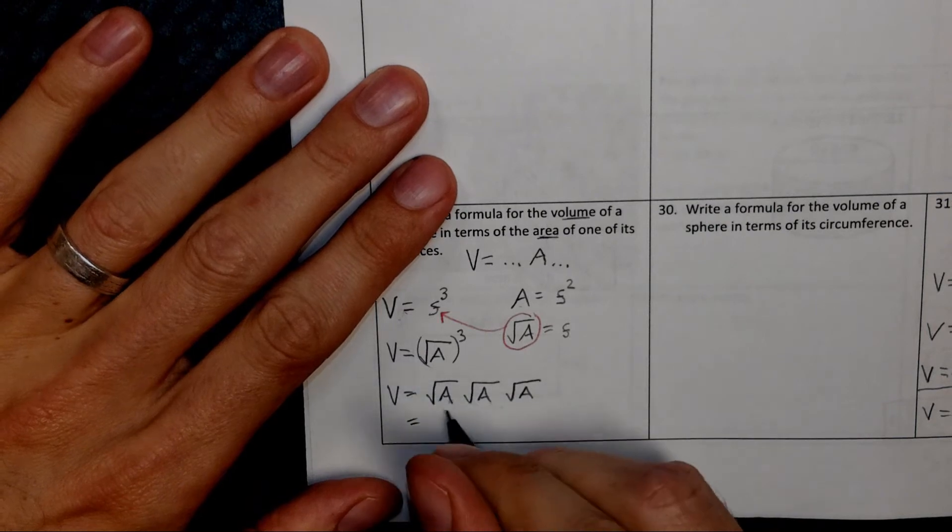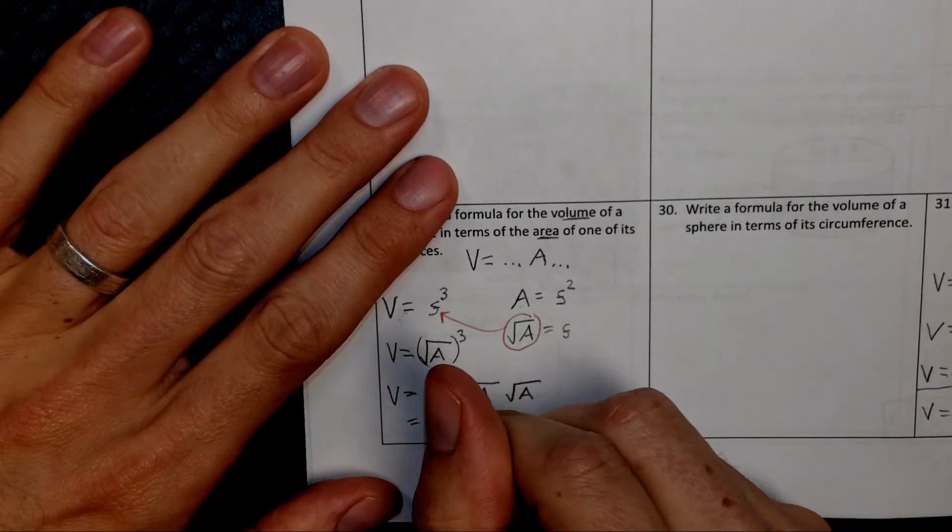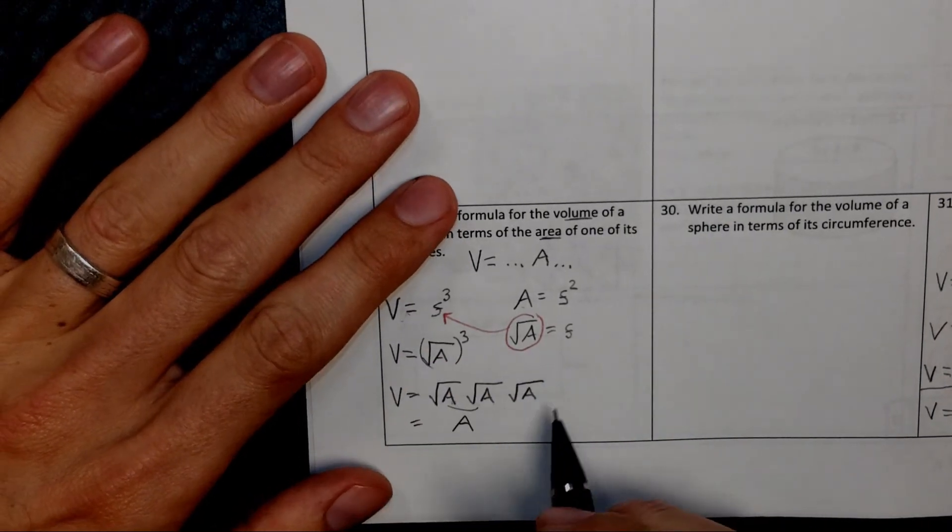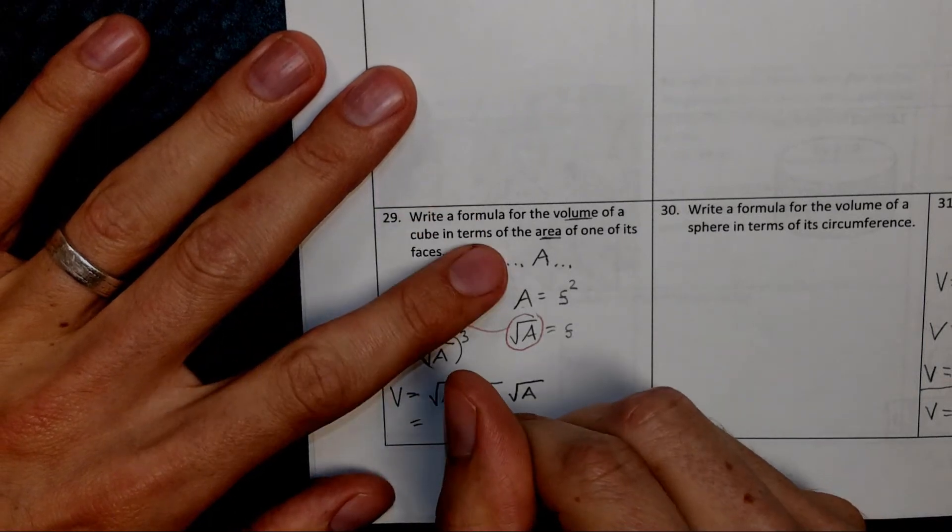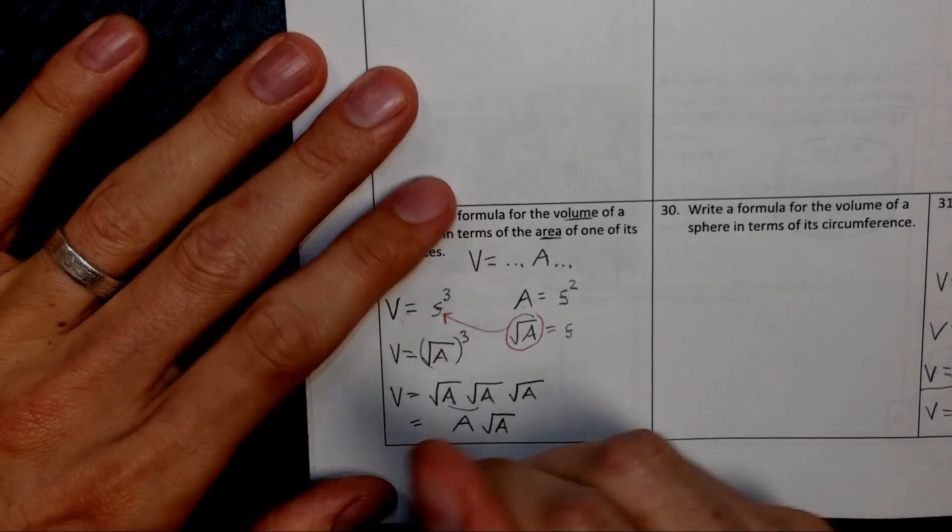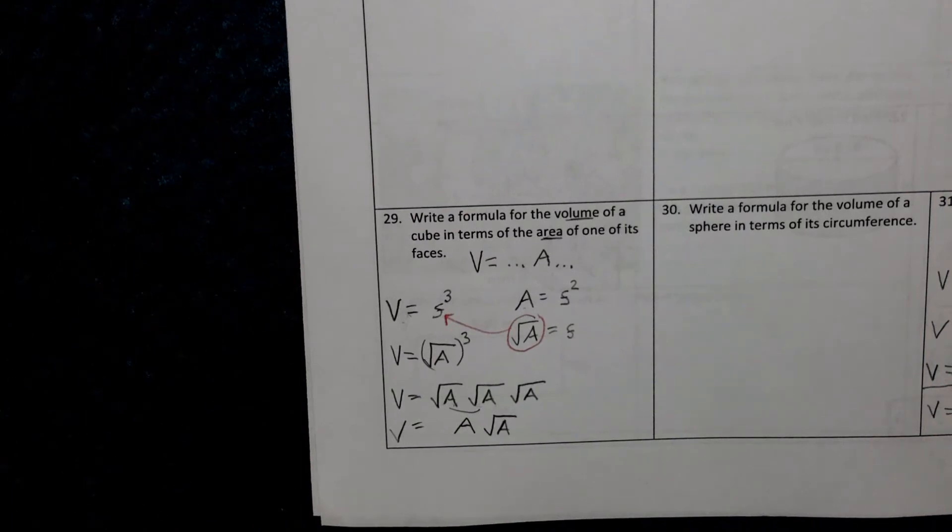All right, so these two multiplied together are A. And what else do we have left to multiply? Well, the square root of A. So that would be another way to write the formula.